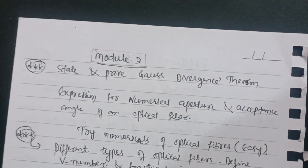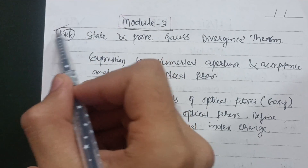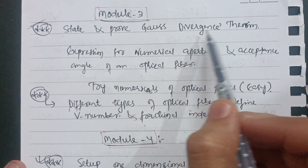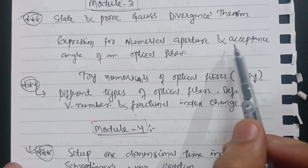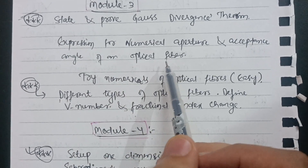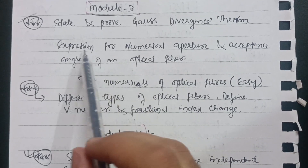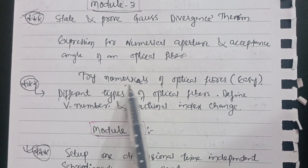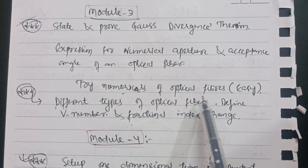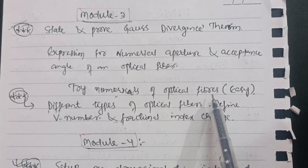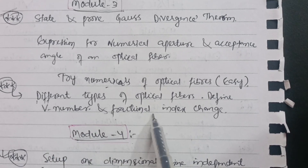Module 3 has a super important question: state and prove Gauss's Divergence Theorem. Also, sometimes they ask for the expression for numerical aperture and acceptance angle of an optical fiber. You need to calculate the angle of acceptance and give the expression for numerical aperture. The numericals on optical fibers are very easy — solutions are typically two or three lines — so go through those problems.